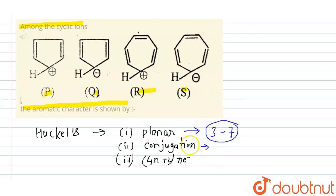Now let's talk about conjugation. Double bond, single bond, double bond, plus ion - so there is conjugation. Double bond, single bond, double bond, minus ion - there is conjugation. Similarly here, similarly here. So all show conjugation.